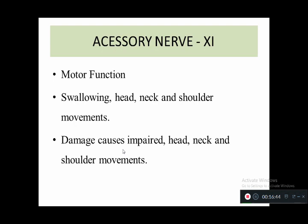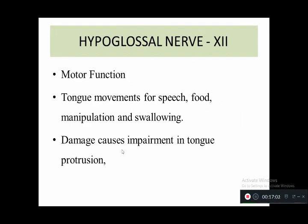The eleventh cranial nerve is the accessory nerve. It is pure motor function and controls swallowing, head movement, and neck and shoulder movement. Any damage leads to impairment in movement of the head, neck, and shoulder. The twelfth and last cranial nerve is the hypoglossal nerve — motor function — responsible for tongue movements for speech and swallowing. Impairment causes tongue protrusion.